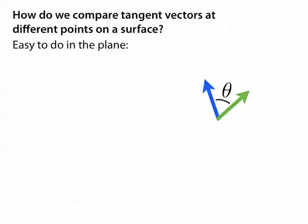On a curved surface, it's not quite as obvious because there are a lot of different ways that we could slide one vector over to another.